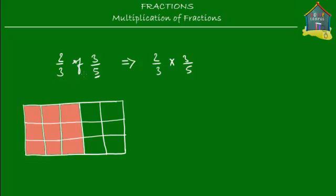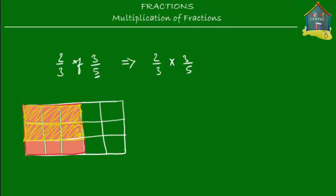Next, we want to find out what is two-thirds of three-fifths. We cut up this entire rectangle three times horizontally. Now, three-fifths is only the red colored area, so when we mark two-thirds we must mark only on the red colored area. Two-thirds is two out of those three parts — so these two parts together, shaded in yellow, is two-thirds of three-fifths.